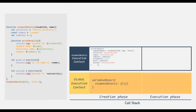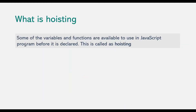Remember that the execution of the code has not yet started — we are still in the creation phase. Since for each variable and function declaration there is already a property created inside this variable object, these variables and functions are already stored in memory before execution has actually started. Because of this, these variables and functions can be used before they are declared. And this is called hoisting in JavaScript — some variables and functions are available to use before they are declared.